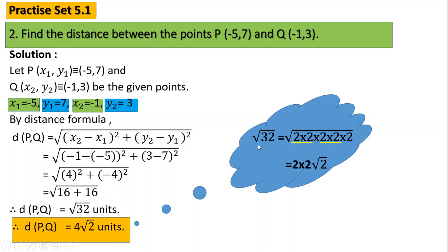Similarly, root 8 from the previous sum can be prime factorized as 2 × 2 × 2. One pair of 2s comes out as 2, leaving one 2 inside the root, so root 8 can be written as 2√2 units. In this way, we have solved three important examples from practice set 5.1 based on the distance formula, calculating the distance between different points. I hope everyone has understood each and every concept. Thank you very much. Have a nice day.